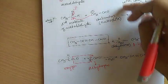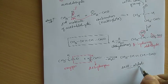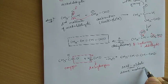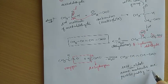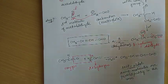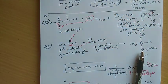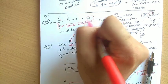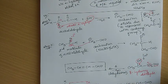This type of aldol condensation involving the same molecules is called self-aldol condensation, because both participating molecules are identical. It is very important to understand that the entire reaction starts with OH⁻ attacking the alpha hydrogen. If there is no alpha hydrogen, the reaction cannot start. So the starting compound must have alpha hydrogens.